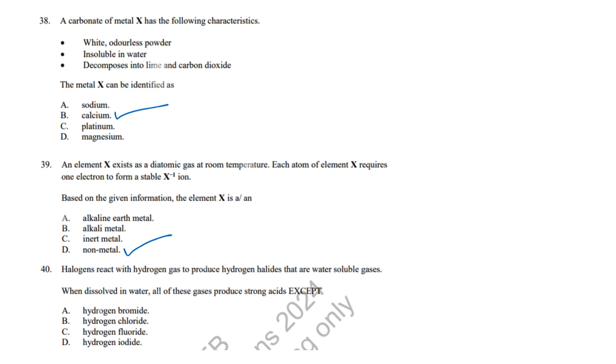Question 40: HF forms strong hydrogen bonds in water, making it a weak acid. Correct answer: C, Hydrogen fluoride.